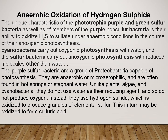The second part covers anaerobic oxidation of Hydrogen Sulphide. The unique characteristic of phototrophic purple and green Sulphur bacteria, as well as the purple non-Sulphur bacteria, is their ability to oxidize Hydrogen Sulphide to Sulphate under anaerobic conditions in the course of their anoxygenic photosynthesis. These bacteria are capable of carrying out photosynthesis, but unlike normal photosynthesis, they do not utilize H2O during carbon dioxide fixation.